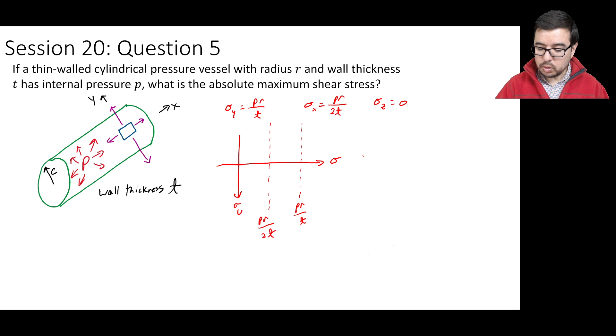We can also see that we have a point sigma z equal to 0. So if we draw the three points of interest, we have them just like that.